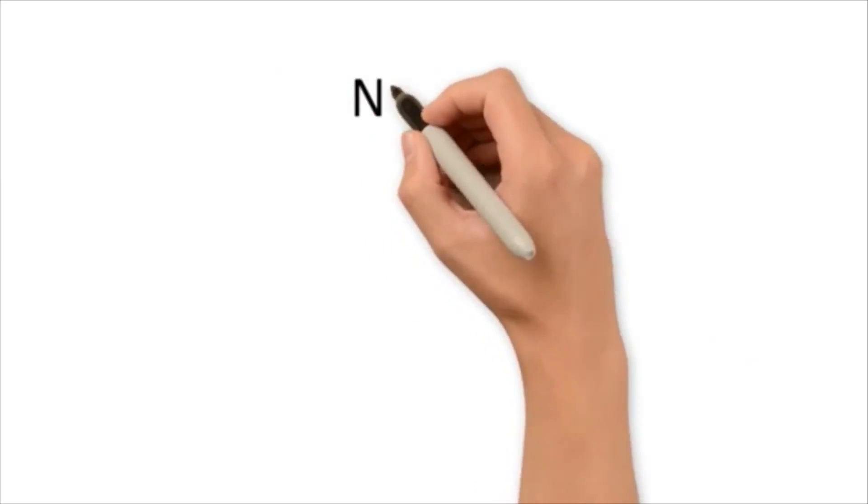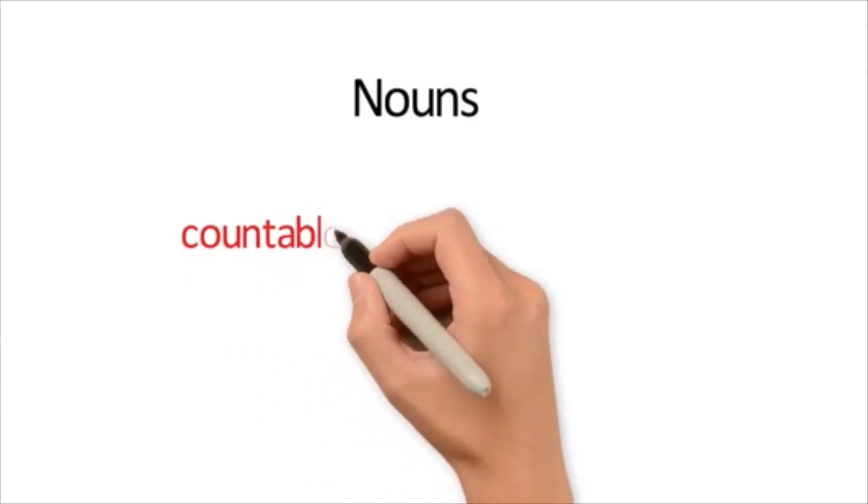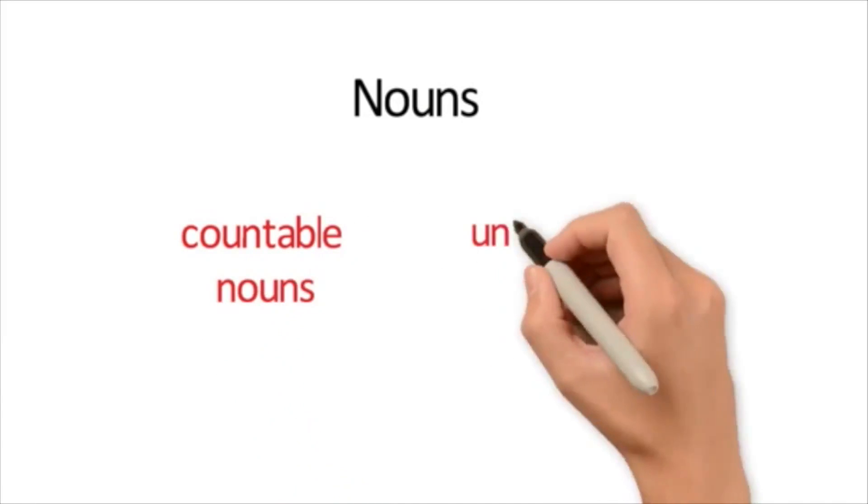Both articles and quantifiers describe nouns, so first we will review some information that you may or may not know about nouns. There are two types of nouns in English: countable nouns and uncountable nouns.